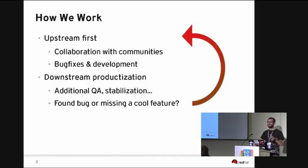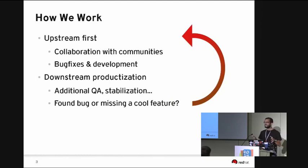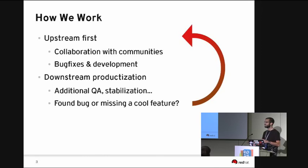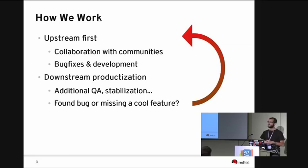Just before I start talking about the communities and Red Hat products, let me briefly explain how Red Hat works. We have this motto that says 'upstream first.' That means we collaborate with communities — all features, all bug fixes go to upstreams first. We send patches, we do planning with communities, we propose new features, we make an agreement with them, and then we send the patches. If we find bugs or security issues, we first send them to upstreams, so we like to make the world a better place.